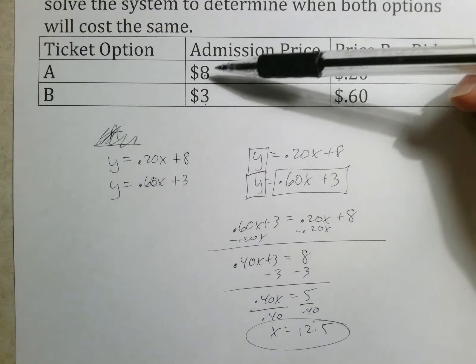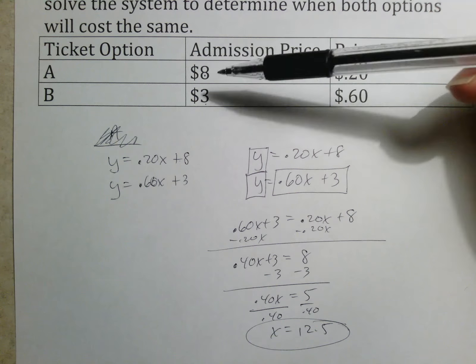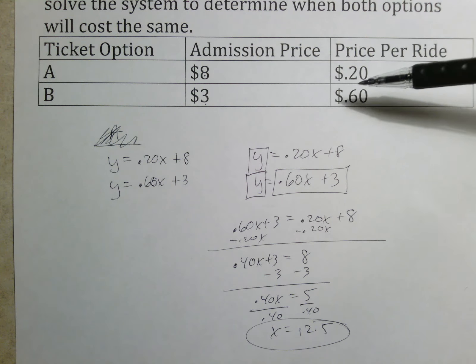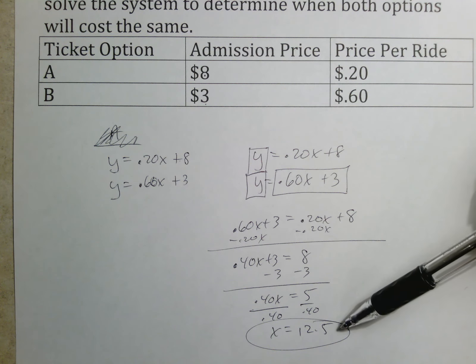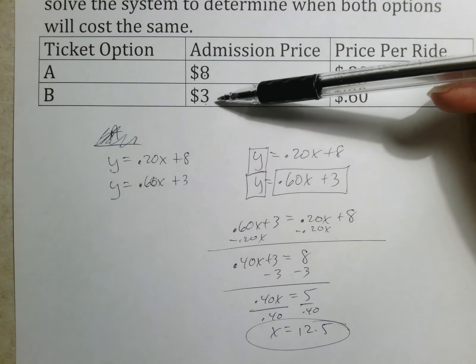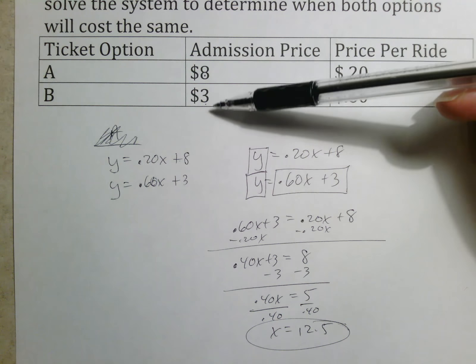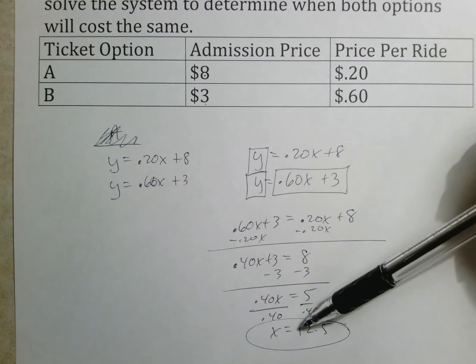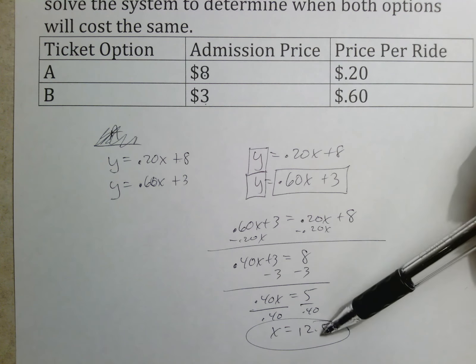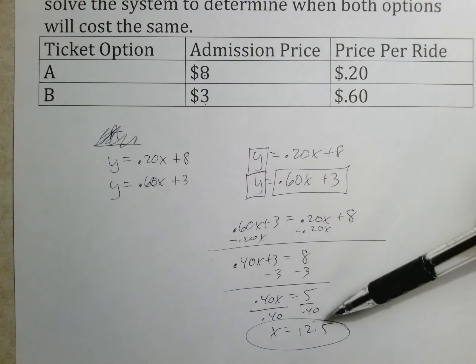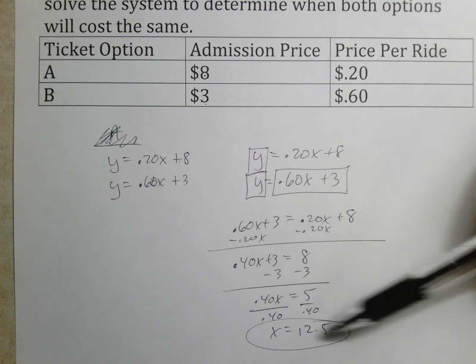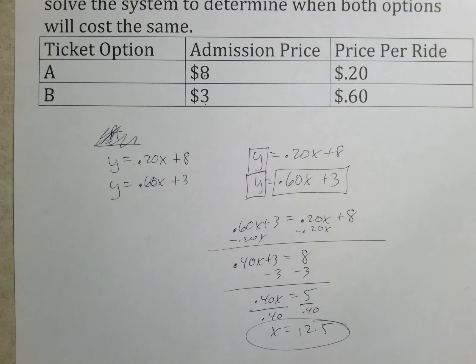So at 12 and a half rides, the way this works: option A is very expensive to get in but it's cheaper per ride. Option B is very cheap but it's more expensive per ride. At 12.5 rides both of these are the same. You could use this as a decision point to say if you know you're going to ride 10 rides, pay the cheaper admission because you're not going to use that many rides. If you know you're going to ride 30 rides, you don't want to pay 60 cents per ride, so you want to pay the higher admission price and the lower price per ride. This 12.5 is where they'll be the same and it tells you where your decision-making point is.